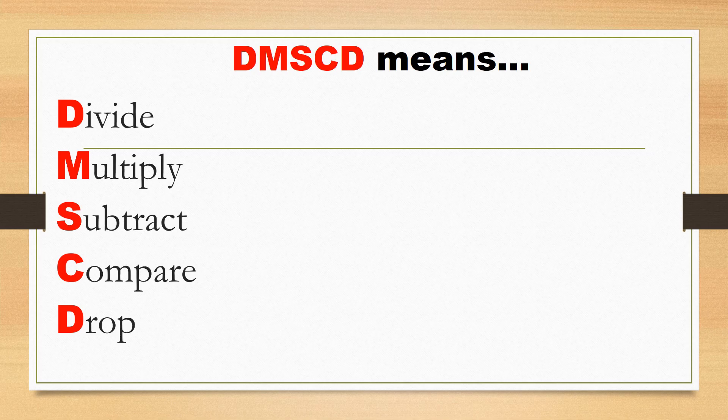D is for divide, M is for multiply, S is for subtract, C is for compare, and D is for drop.